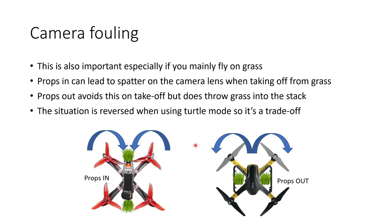Alternatively, when you're running props in and using turtle mode, you're probably not going to get anything on the camera. In my experience, if you're using high-def recording — like maybe you've got a split-style camera or you're recording from the air unit or from the goggles — then props out does provide a bit of an advantage because at least you avoid the risk of getting stuff on your camera lens before you've even started flying.